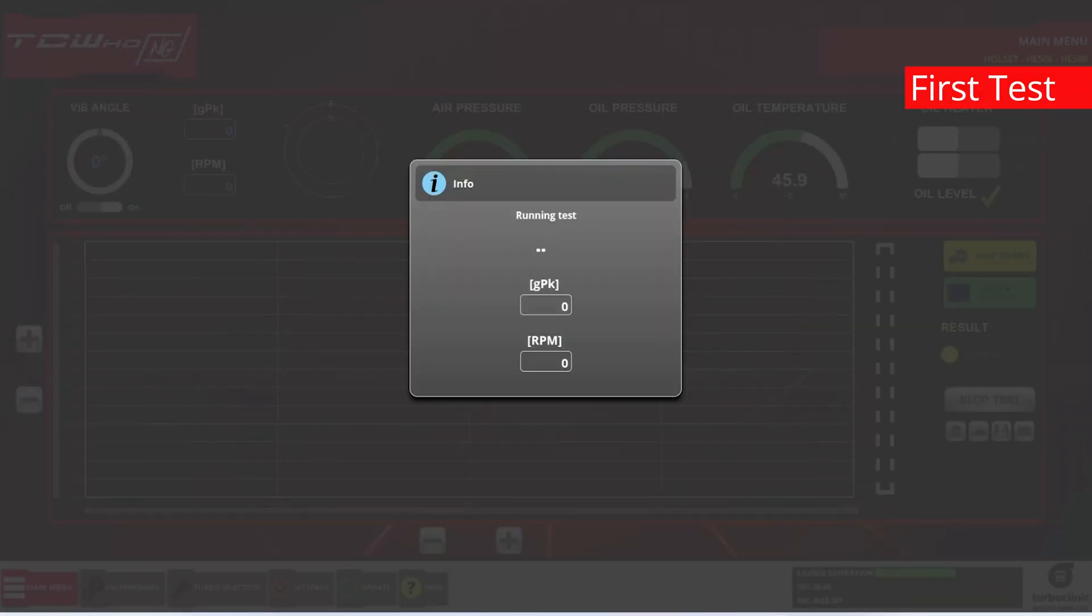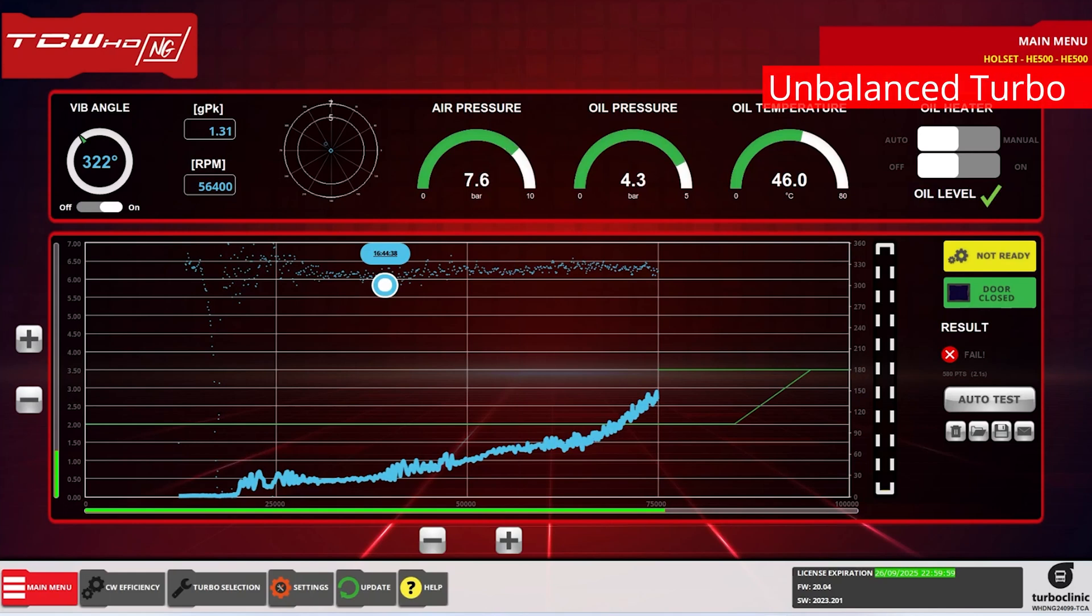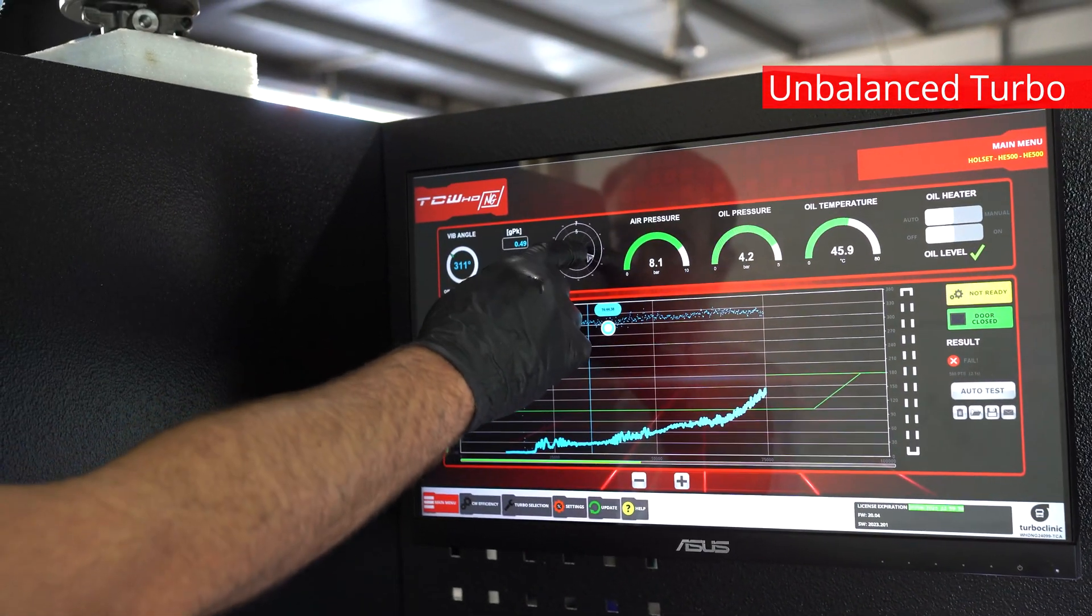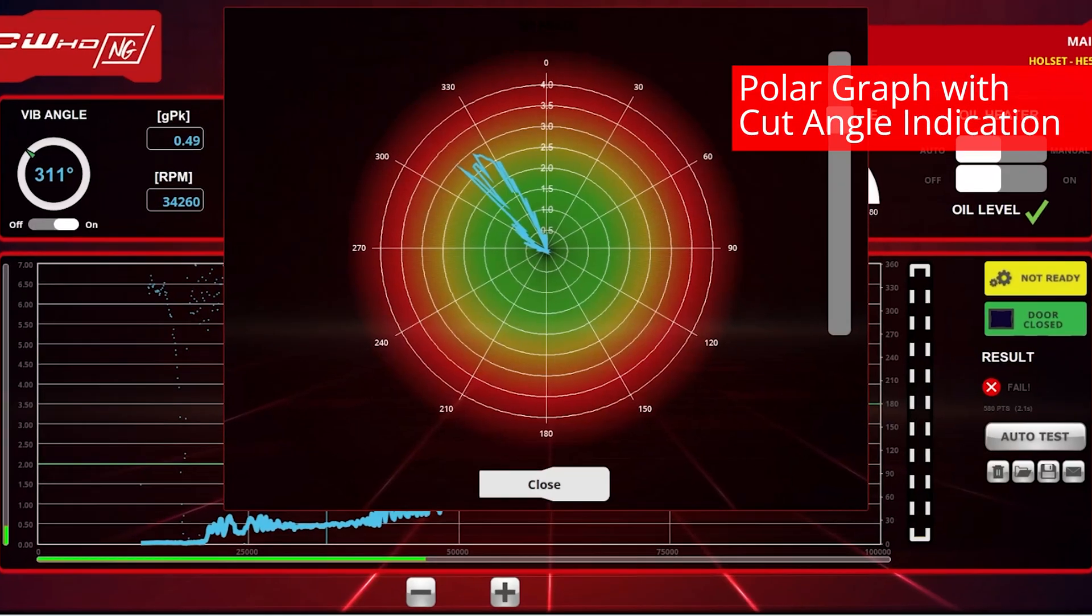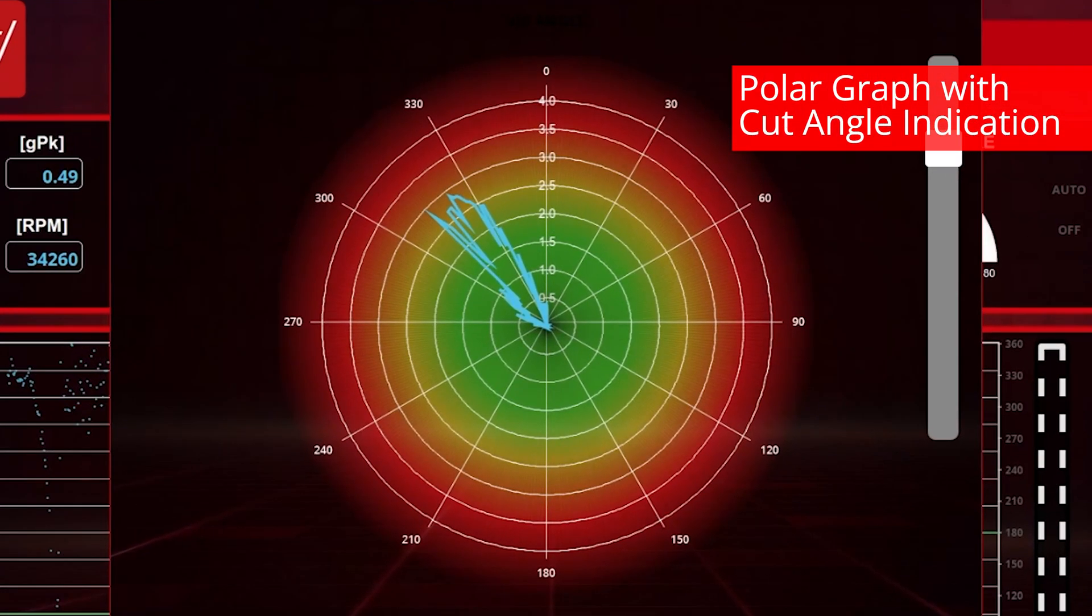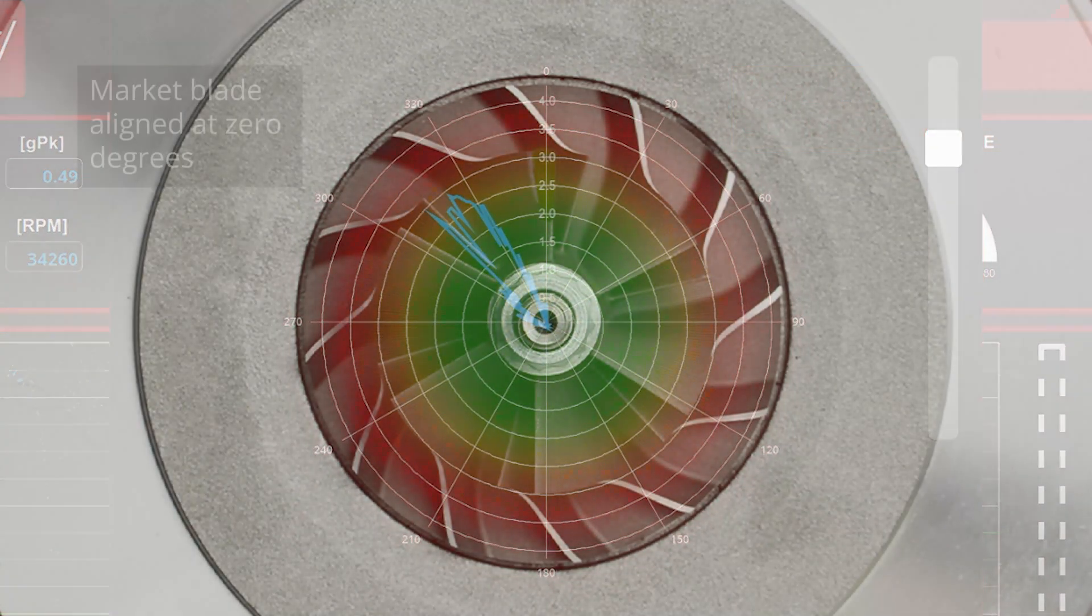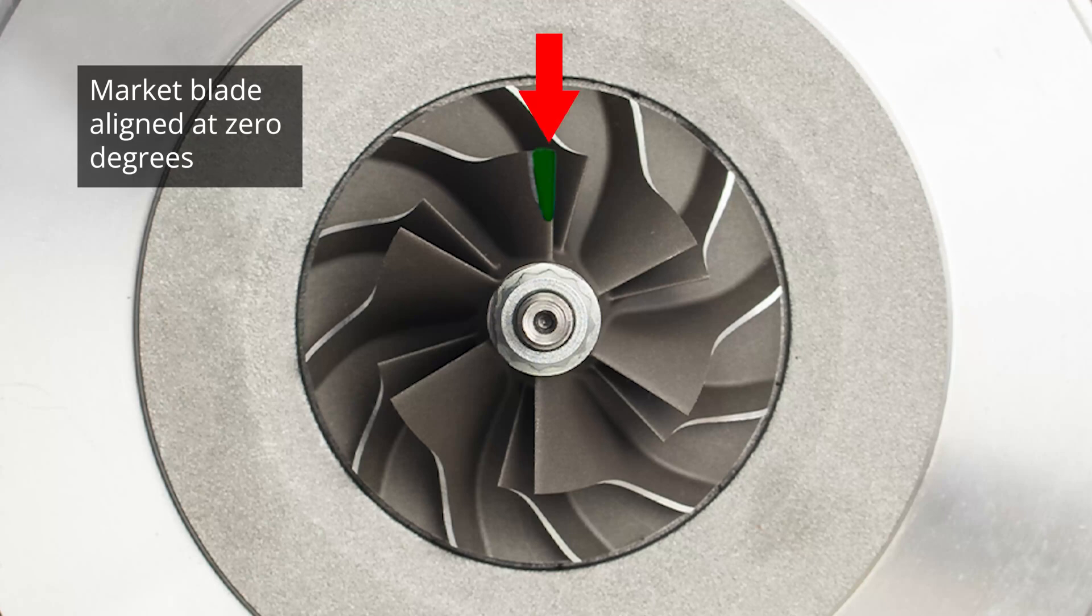Next, we check the turbo's balance and vibration points that are above the green line. With the polar chart, we can easily identify where to cut to keep vibrations within the green line.